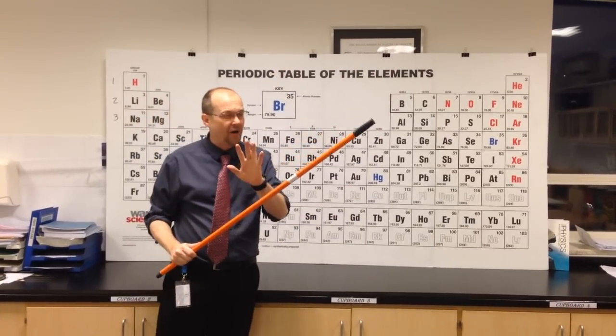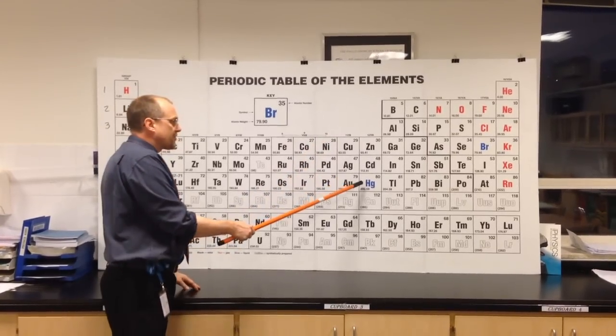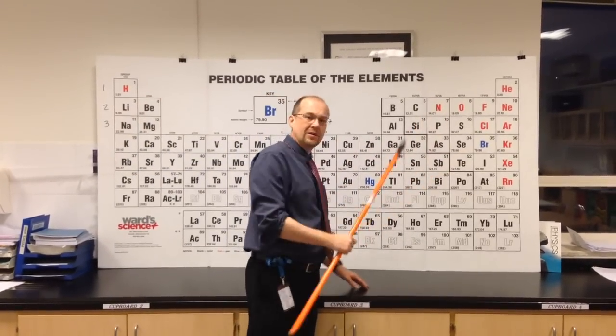You need to know that there's only two liquids, arguably, on a periodic table at room temperature and pressure, and that is mercury, a liquid metal, and bromine, a liquid non-metal.